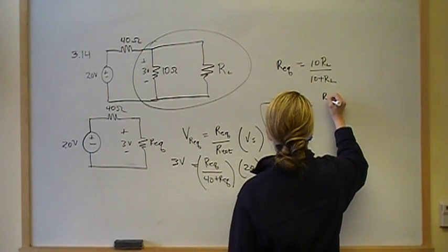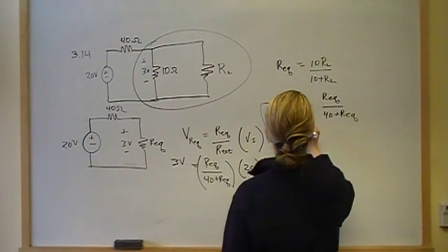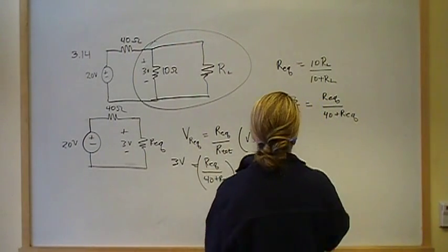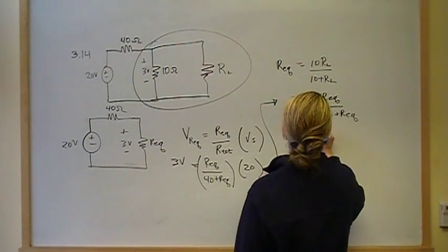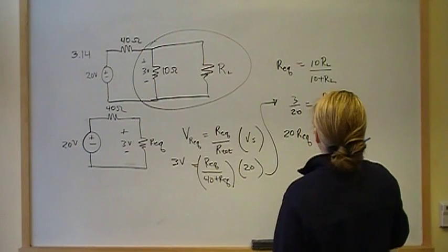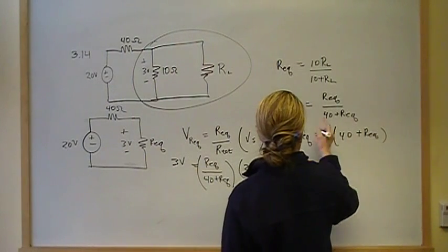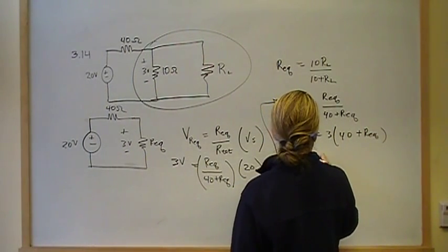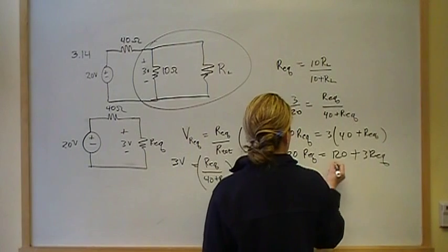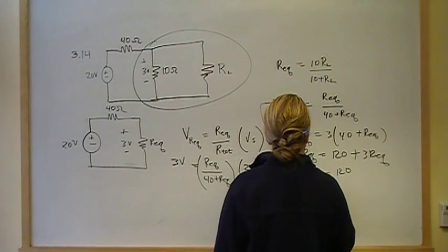That's equal to REQ over 40 plus REQ. Cross multiply gives us 20 times REQ. That's equal to 3 times 40 plus REQ. That gives me 20 REQ equals 120 plus 3 REQ. And that gives me 17 REQ equals 120. That gives me REQ equals 120 over 17.